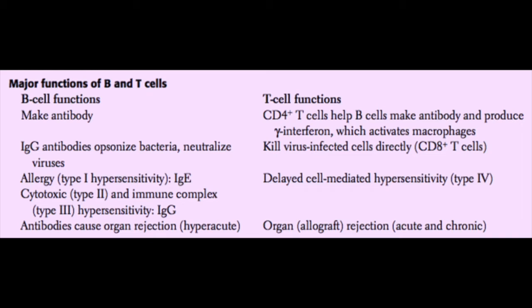B cells and T cells are our other lymphocytes. The B cell functions mainly to make antibodies. Antibodies aren't toxic themselves, but they opsonize bacteria to make them more attractive to macrophages for phagocytosis, neutralize viruses (especially IgG), activate complement (IgM and IgG, with IgM being better), and sensitize mast cells via IgE. B cells also mediate allergies — type 1 hypersensitivity through IgE — cytotoxic and immune complex hypersensitivities (type 2 and 3) mainly through IgG, and hyperacute organ rejection mediated by preformed antibodies within the transplant recipient.